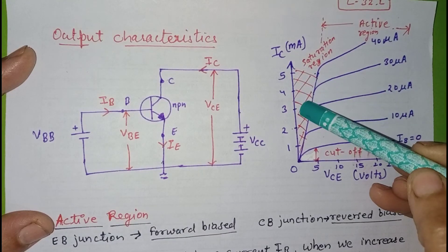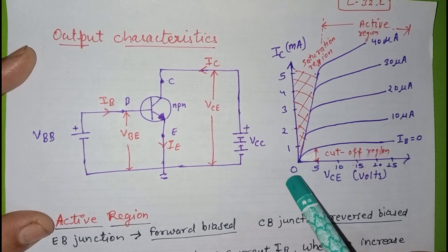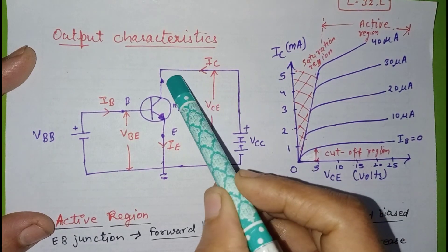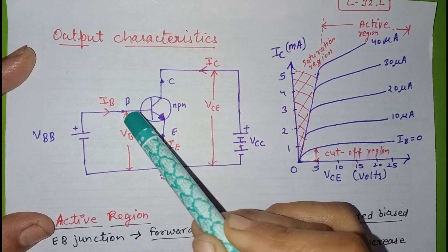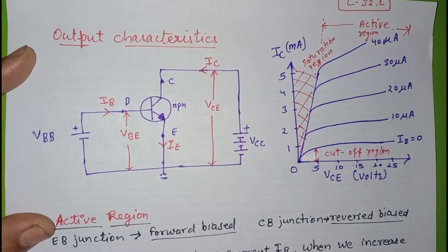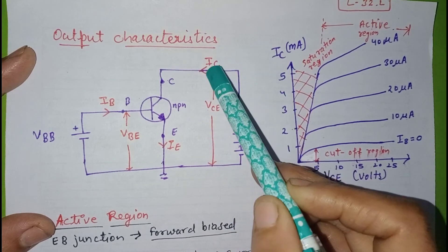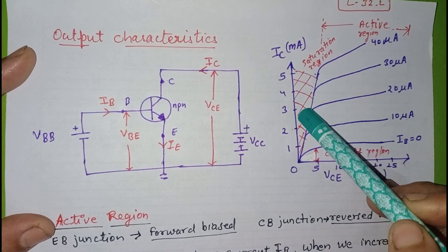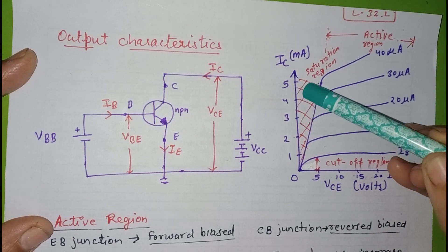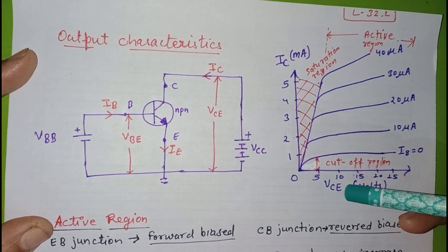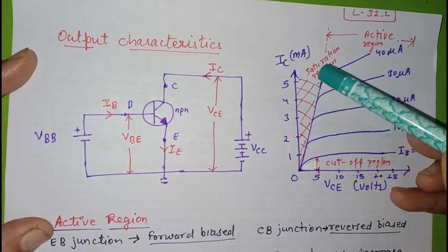The saturation region occurs when VCE is decreased to nearly zero volts, causing the collector-base junction to become forward biased. In saturation, both the collector-base junction and the base-emitter junction are forward biased. In this region, a small increase in VCE causes a large increment in IC, and the current is independent of IB. Because of this large current increase, the saturation region is used when the transistor operates as a switch in the ON condition.